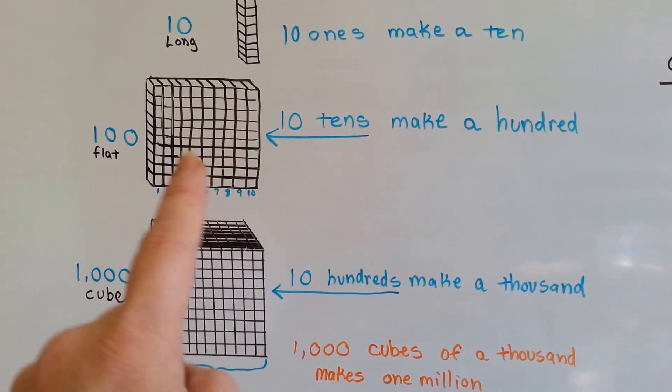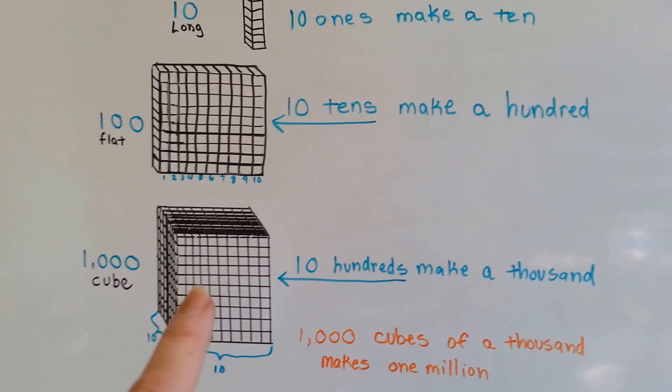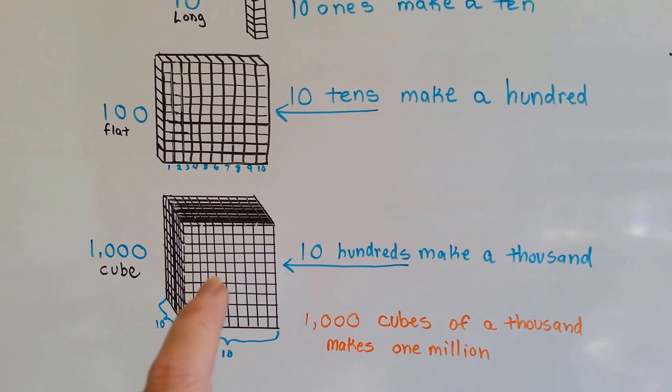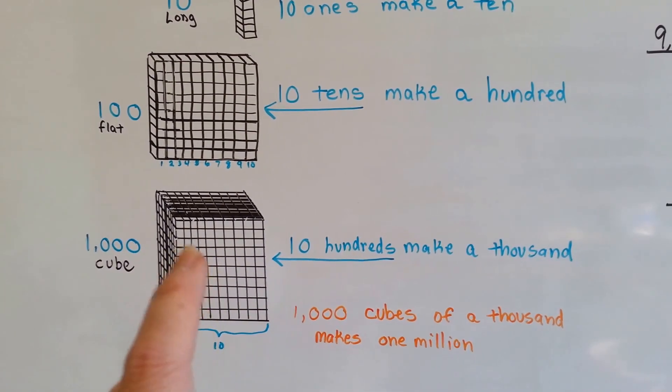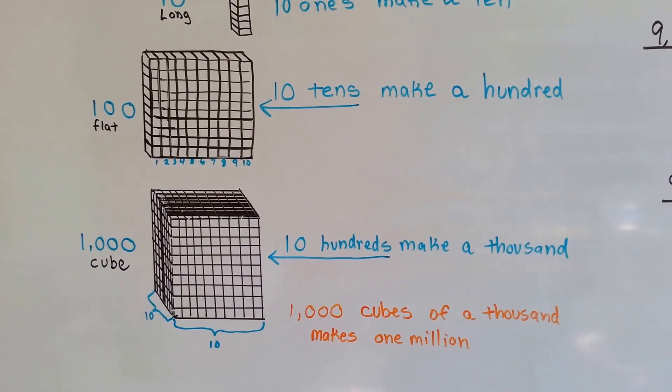A thousand of these little one cubes are in this big block cube. Each one of these flats is a hundred, and if you get ten of them, you get a thousand. See? Times ten. So ten of these hundreds make a thousand. Did you know that a thousand of these cubes makes a million? That's a lot of cubes.